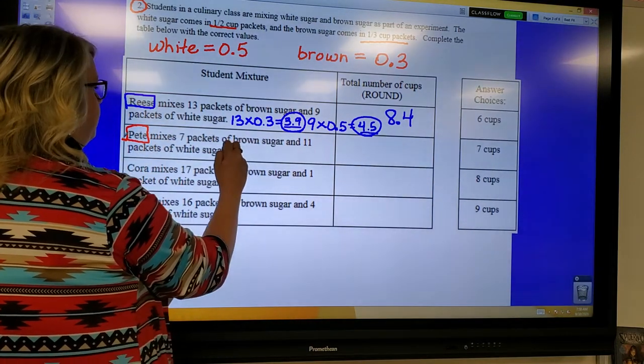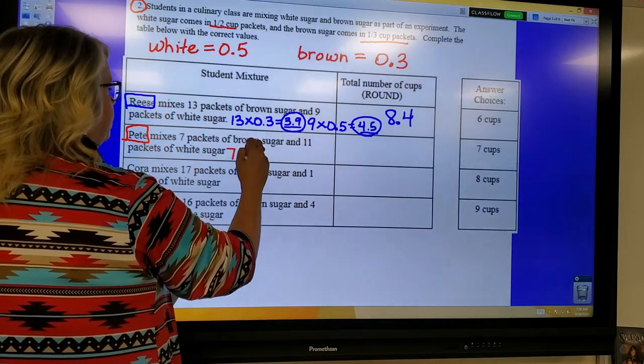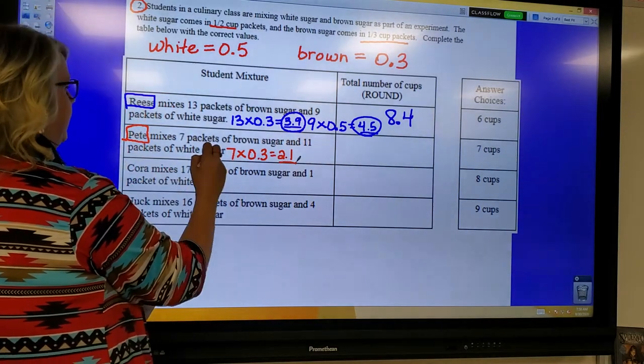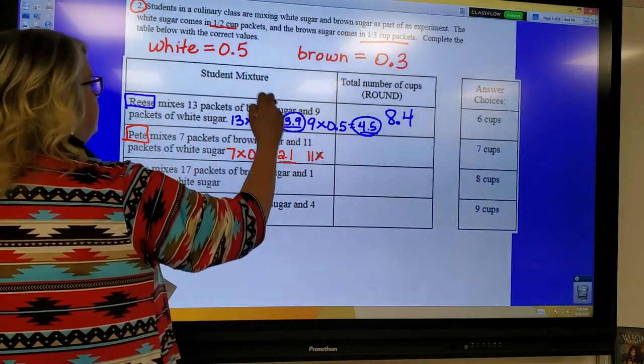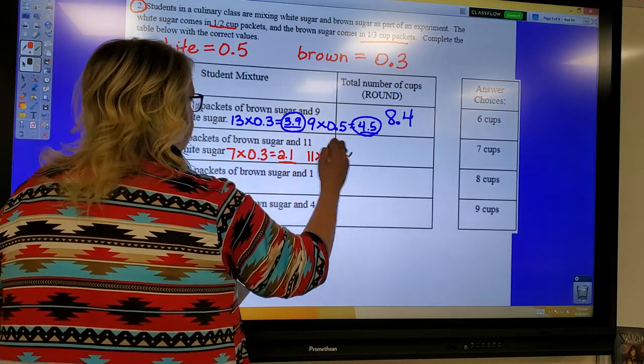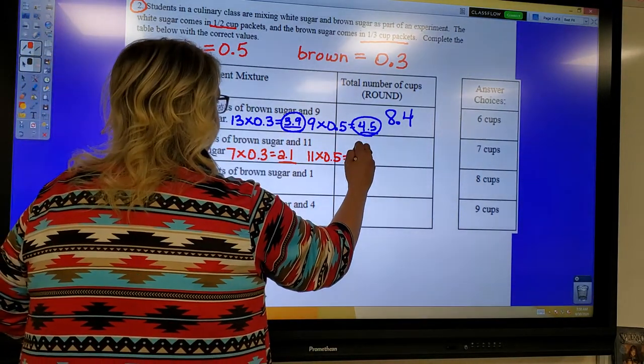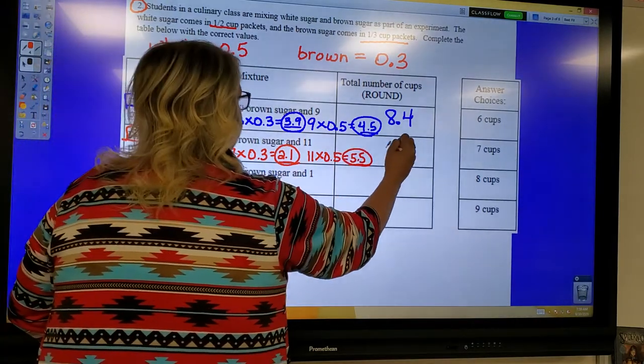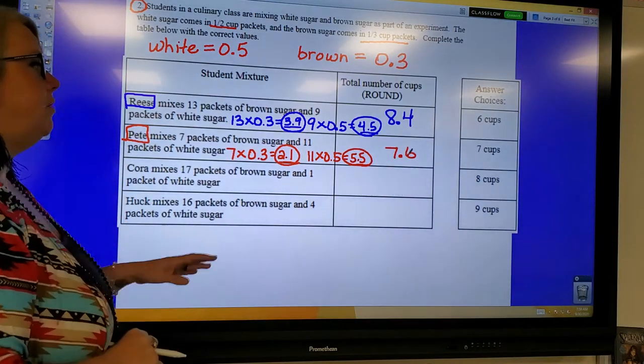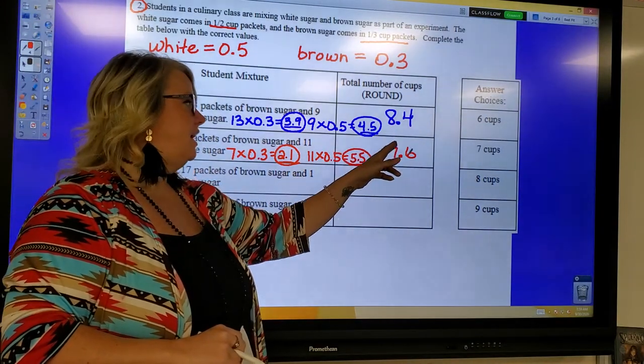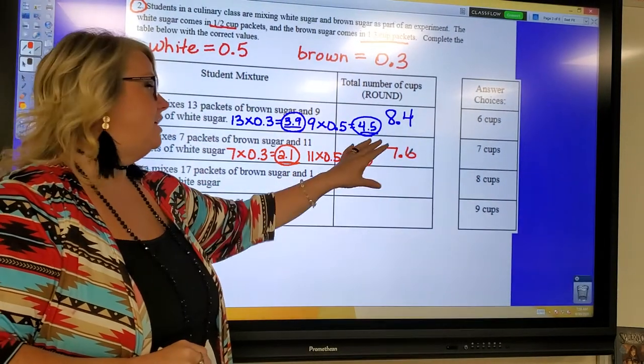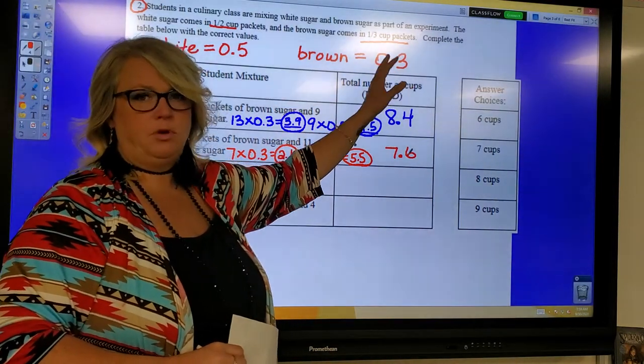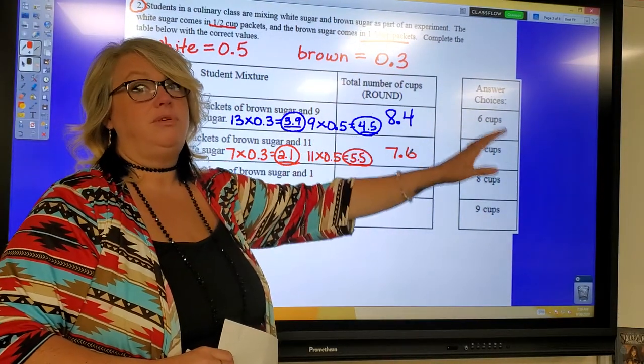It says Pete had 7 packets of brown. So 7 times the brown is 0.3, and 7 times 0.3 is 2.1, and 11 packets of white. So 11 times my white is 0.5. And 11 times 0.5 is 5.5. So I am adding my 2.1 and my 5.5, and that gives me 7.6. So you can see the problem here. This would technically round down to 8. That would technically round up to 8. So we need to be careful and get our other answers so that we can match them up correctly. Now, the reason our answers are a little off is because of the 0.3. Remember, that 0.3 really should have been 0.333333333.